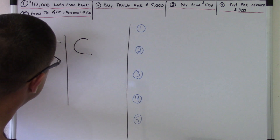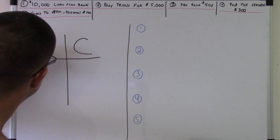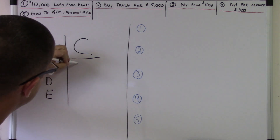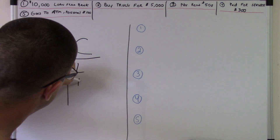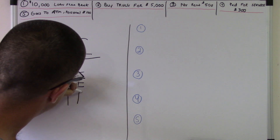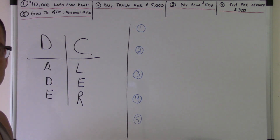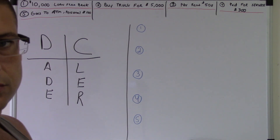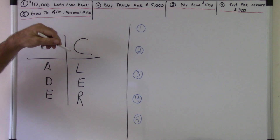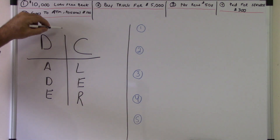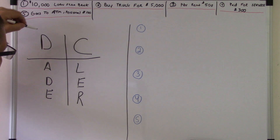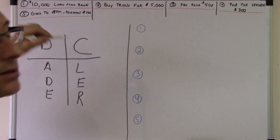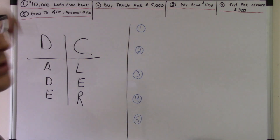DC AID LUR. We're going to do some journal entries today. This is what you're going to write — and see, this is a plus, this is a plus too. So these are all on the positive sides of the debits and credits.